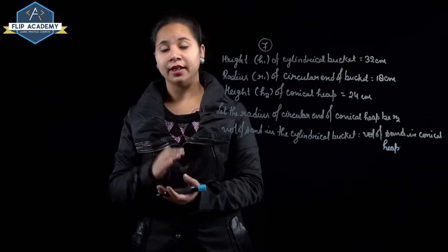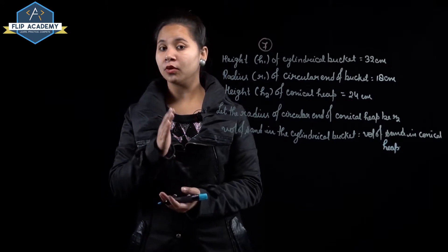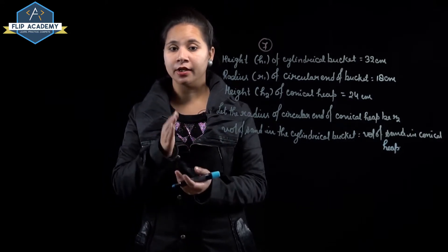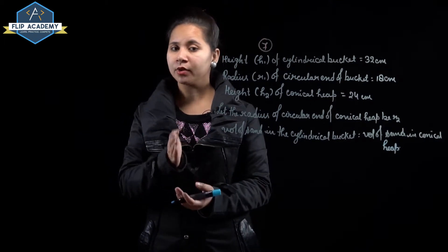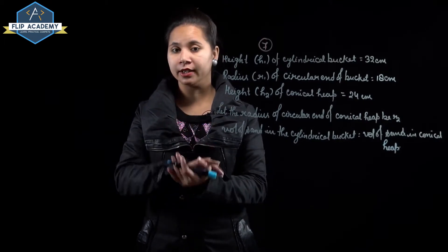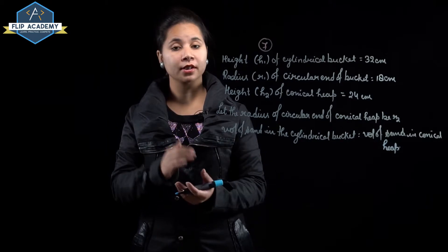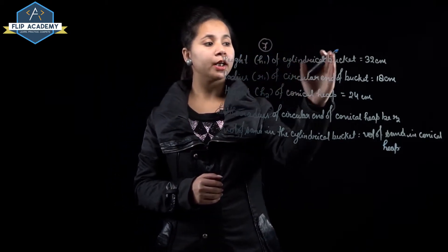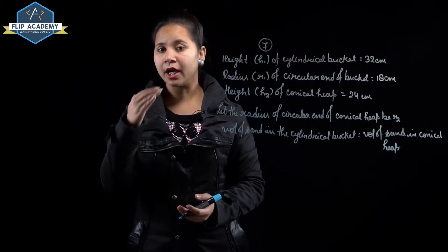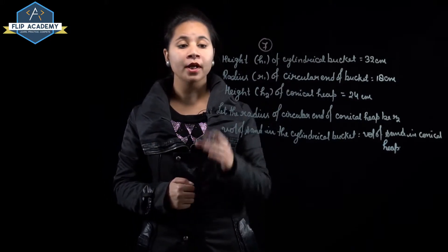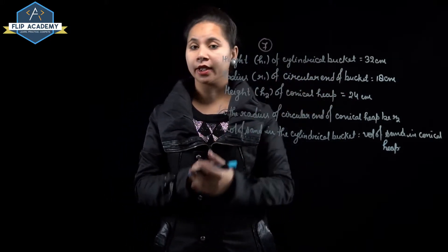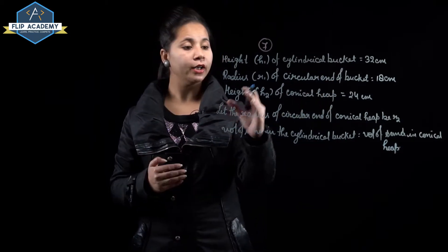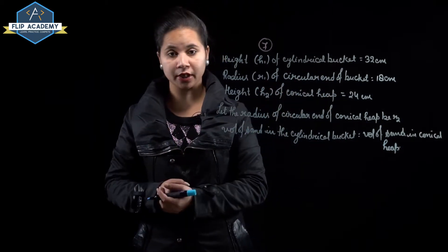In this question, a cylindrical bucket filled with sand is emptied onto the ground in the shape of a cone. Given: height of cylindrical bucket h1 = 32 cm, radius r1 = 18 cm, and height of conical heap h2 = 24 cm.